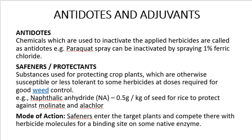Second, safeners or protectants: substances used for protecting crop plants which are otherwise susceptible or less tolerant to some herbicides at the dose required for good weed control. For example, naphthalic anhydride at 0.5 gram per kg of seeds for rice, to protect against molinate and alachlor. Safeners protect crop plants from chemical herbicides. The mode of action: safeners enter the target plants and compete there with herbicide molecules for binding sites on the same native enzymes.